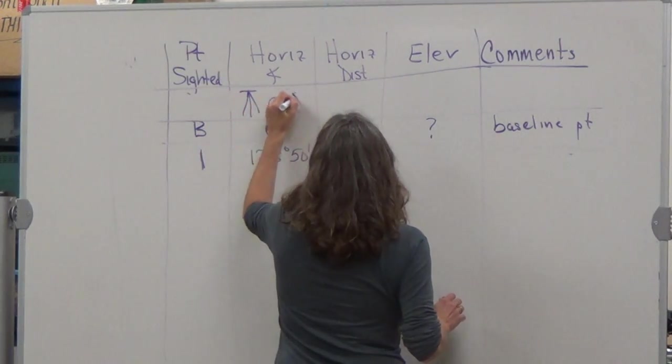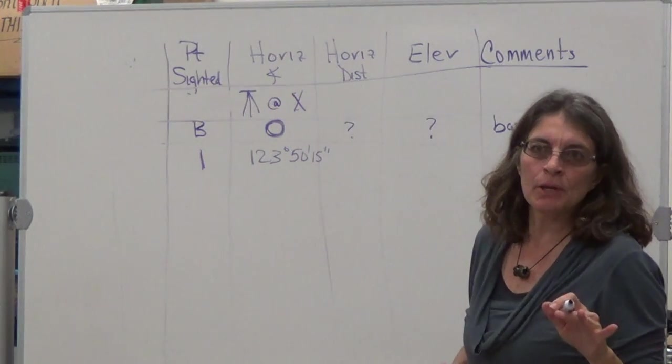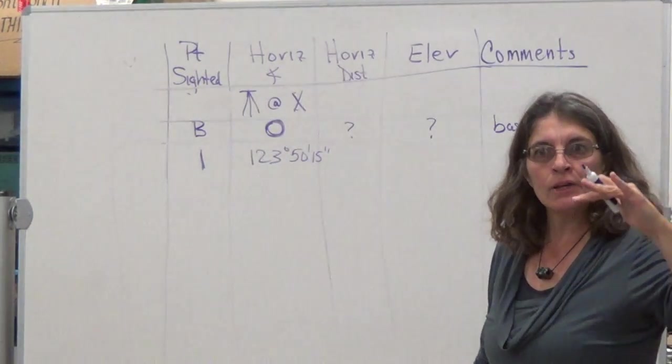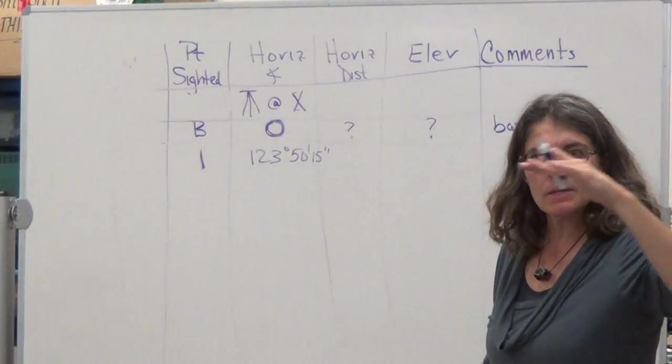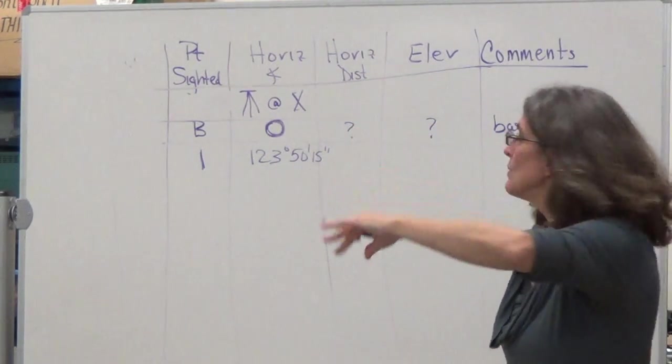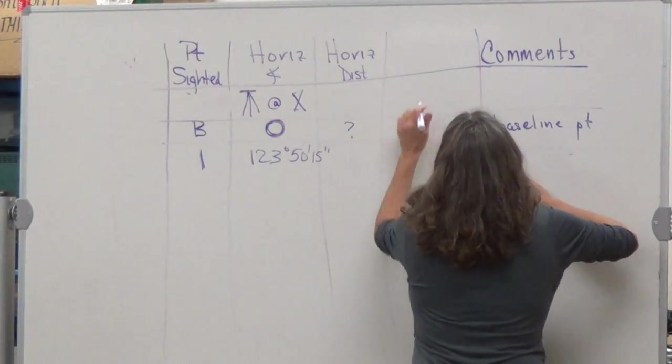Isn't that something that's directly recorded from the total station? We're gonna talk about that because it depends. You can imagine it depends on how high your telescope of your instrument is and how high the prism pole is. Yeah, vertical, right. So you're right, elevation is not what's going to be given.